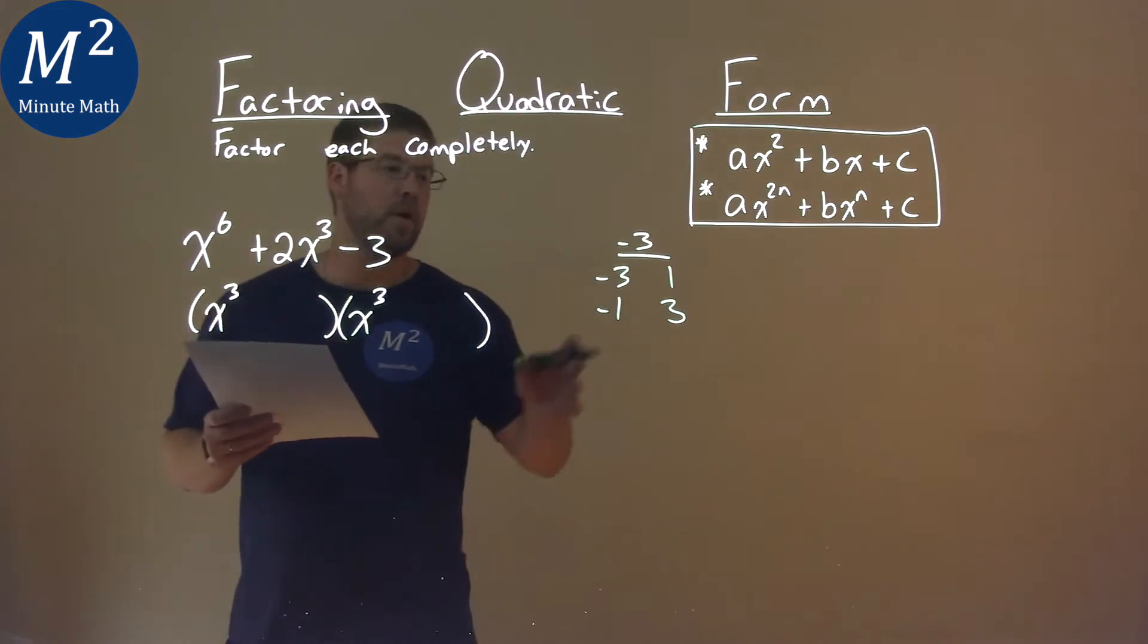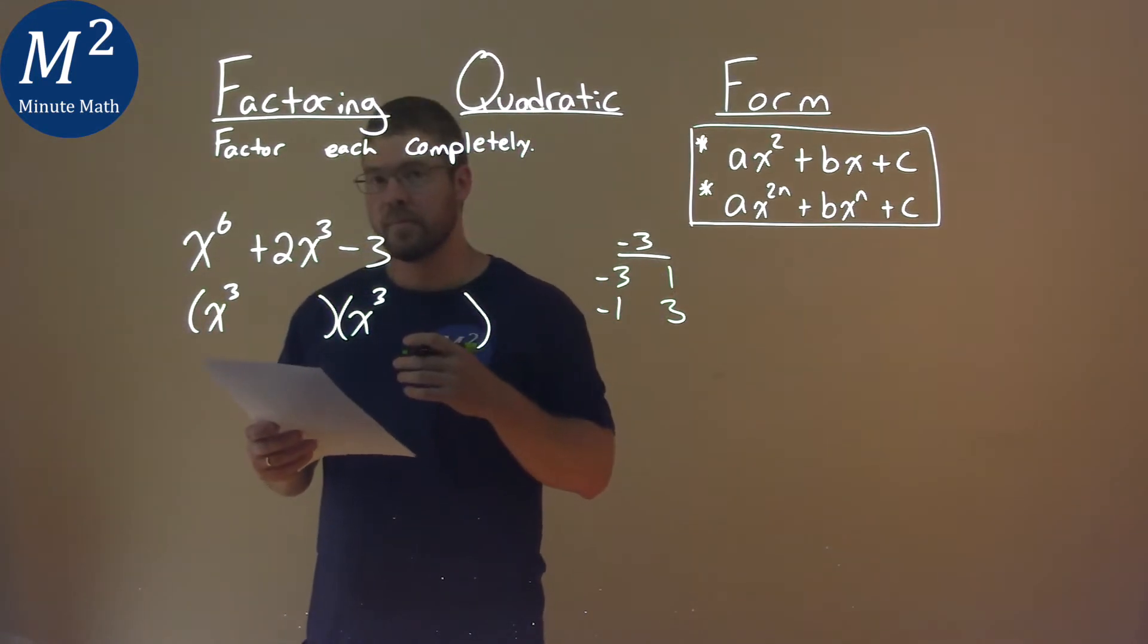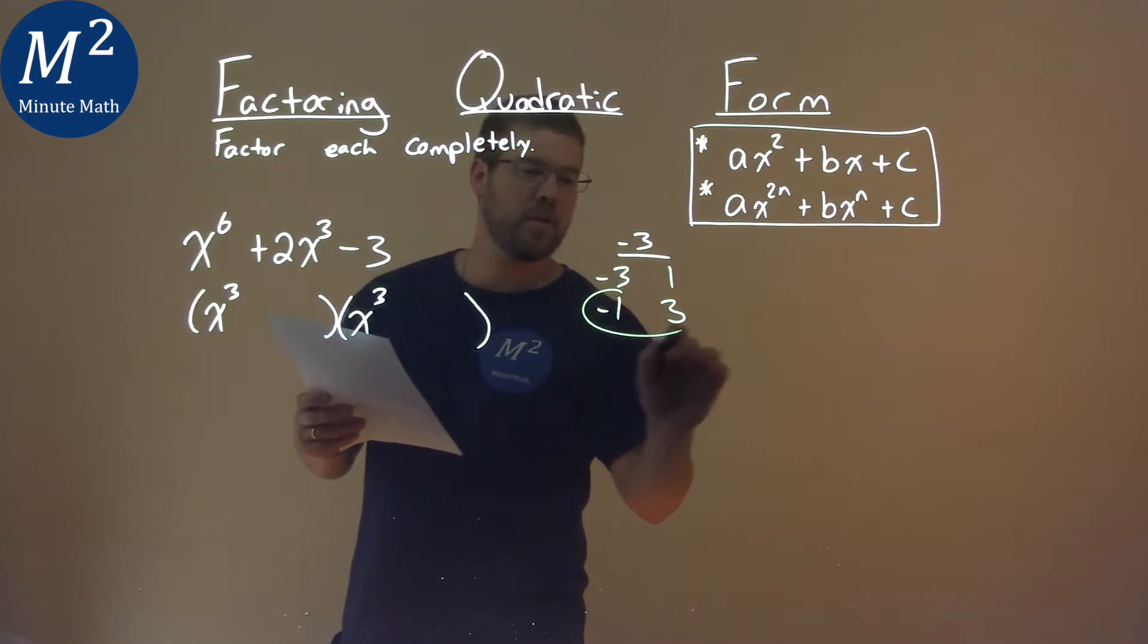So which two numbers, we know they multiply together to be negative 3, but add to be a positive 2? That's easy, negative 1 and 3.